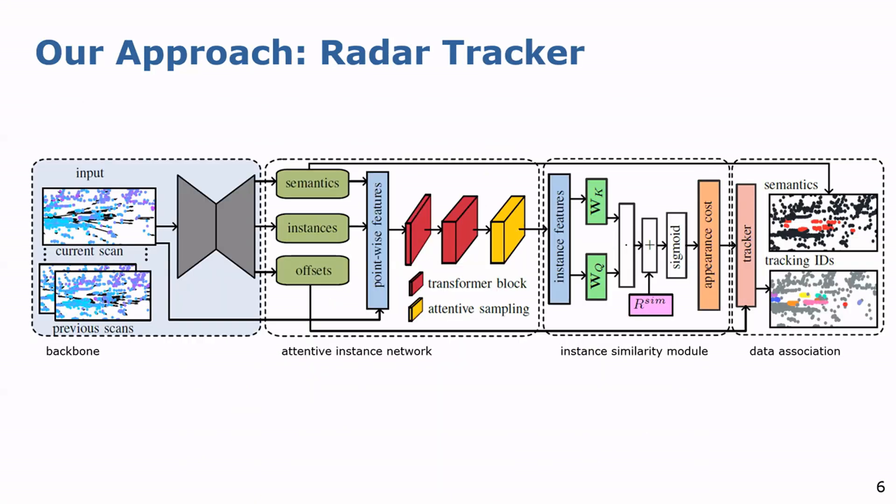The overall architecture of our radar tracker splits up into four parts: the backbone, the attentive instance network, the instance similarity module and the data association. As backbone, we utilize the current state-of-the-art radar instance transformer to detect moving instances.